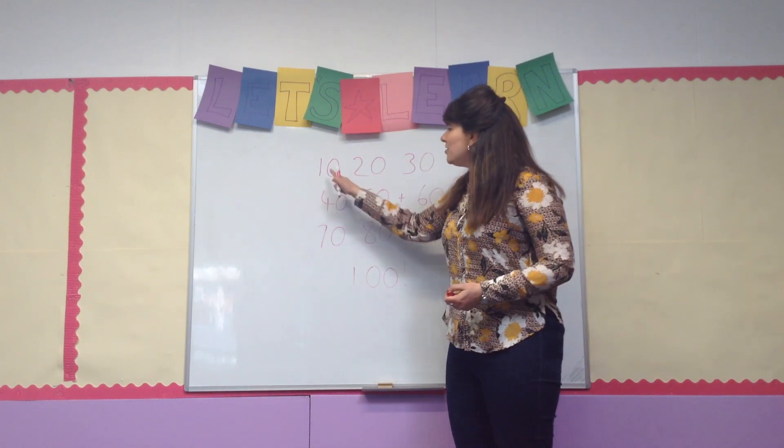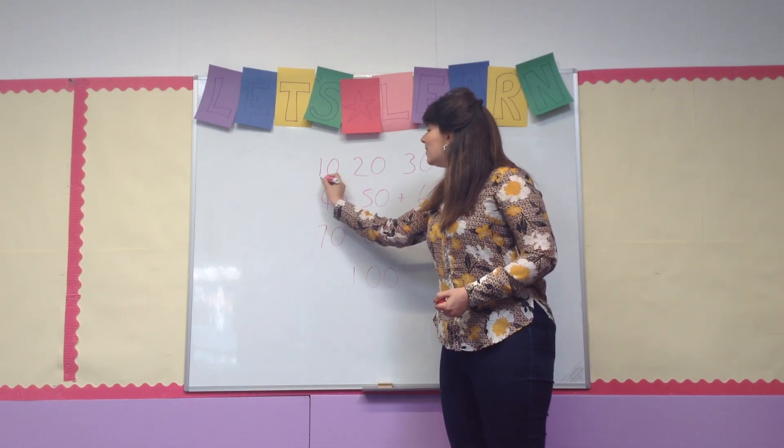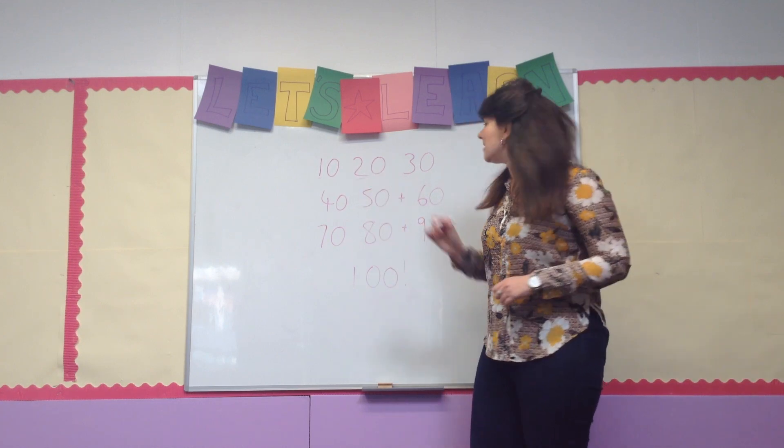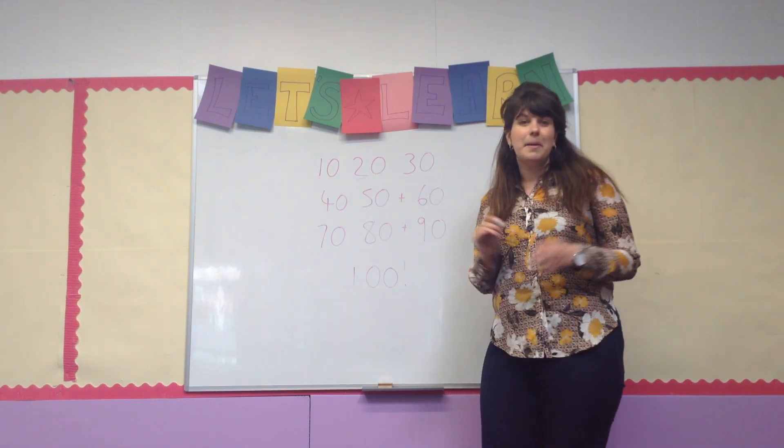So, if you see, 1 times 10 makes 10. 2 times 10 makes 20. 3 times 10 makes 30.